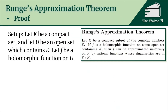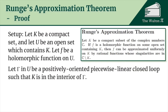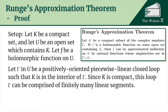To set up the proof, we let K be a compact set, U an open set containing K, and f a holomorphic function on U. We then let gamma in U be a positively oriented piecewise linear closed loop, with K in the interior of gamma. Positively oriented means the standard direction; piecewise linear means it is made up of line segments; and it is closed, ending where it starts. Since K is compact, this loop can be comprised of finitely many linear segments.